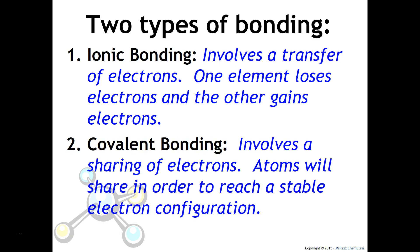The second type is covalent bonding. In covalent bonding, this involves a sharing of electrons. Atoms will share in order to reach a stable electron configuration. As you might expect, this will be divided up into two different lessons. We'll spend time talking about both ionic bonding and covalent bonding.